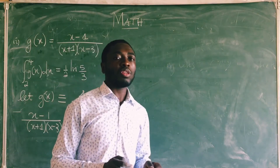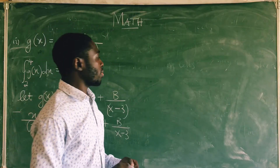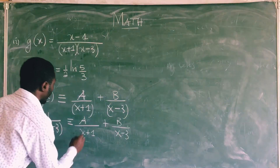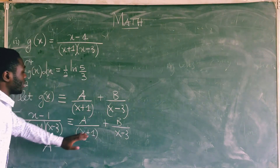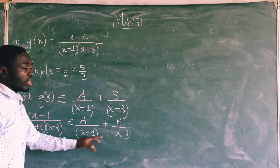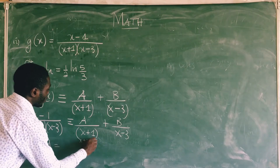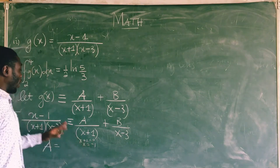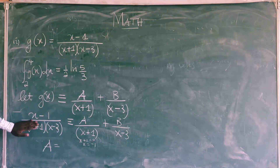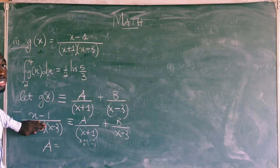You should know that you use the cover-up method only when the denominators are linear functions. For A, what happens is that I equate the denominator of A to zero — so x plus 1 equal to 0 implies x equal to negative 1. I take that negative 1, come back to my left hand side, cover the denominator of A, and substitute negative 1 wherever I see x in order to get my value of A.